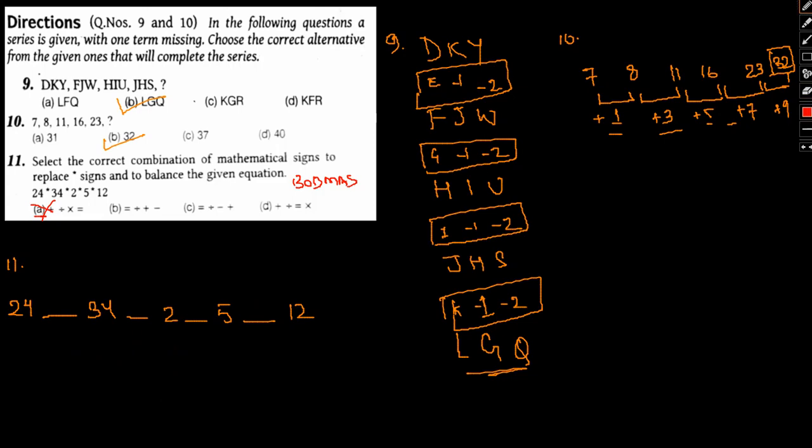Now let's go with option B. We have equal to, divide, plus and minus. So this will be 17 plus 5 minus 12. 22 minus 12, that is 10, which is not equal to 24. So again option B is wrong.